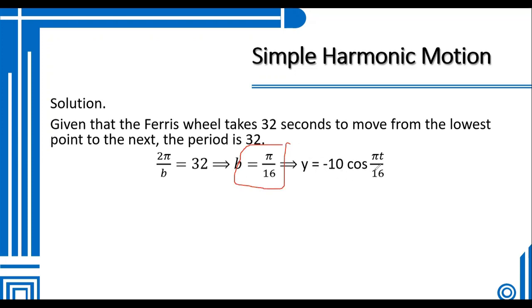By substituting b into our model, y = -10 cos(πt/16). Now since we have the equation, we can use the specific time given to find the height.